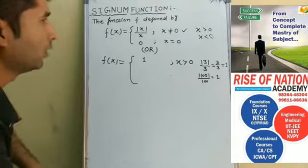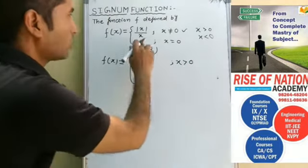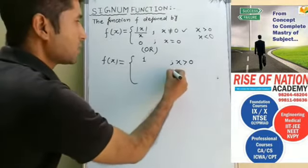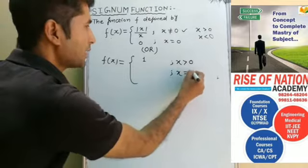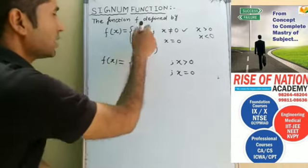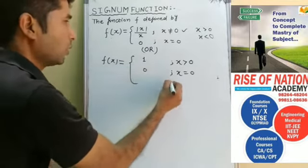Now we take the value of x as 0. So when x = 0, the value of the function is also 0.